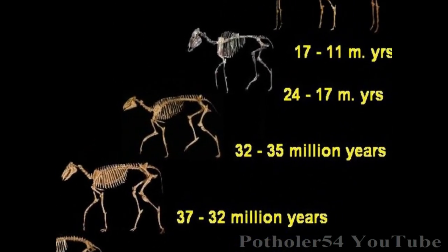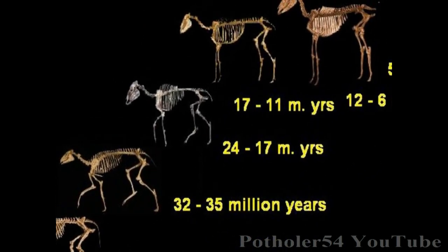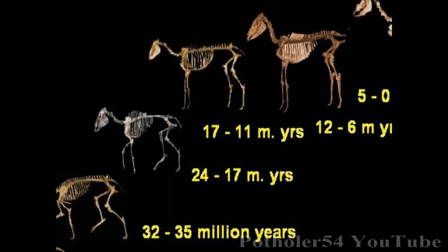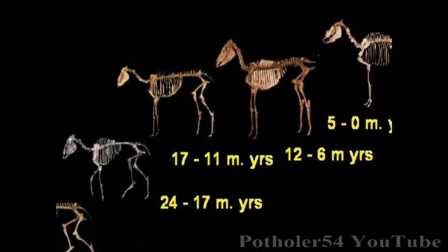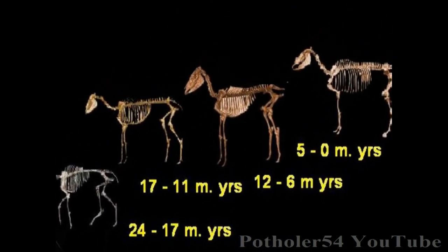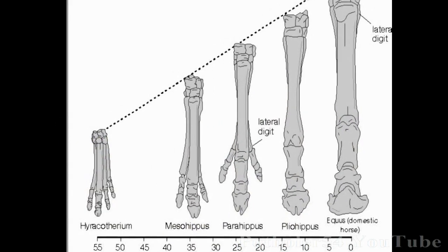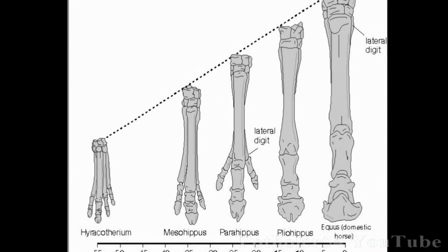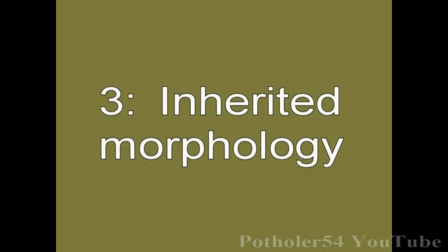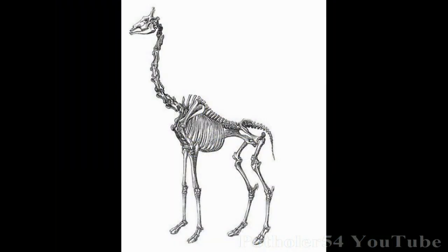Either each species is suddenly being killed off, only to be replaced by the sudden appearance of something that's almost identical, or we're seeing the changing morphology of a single species through time. We'd also expect to see traces of an animal's evolutionary ancestry in its morphology today. And we do.